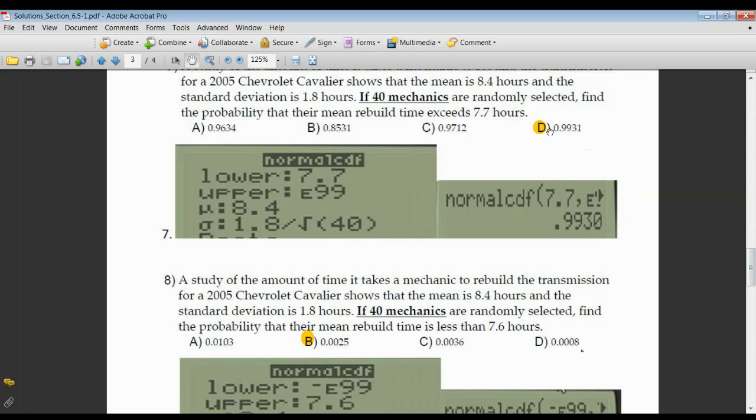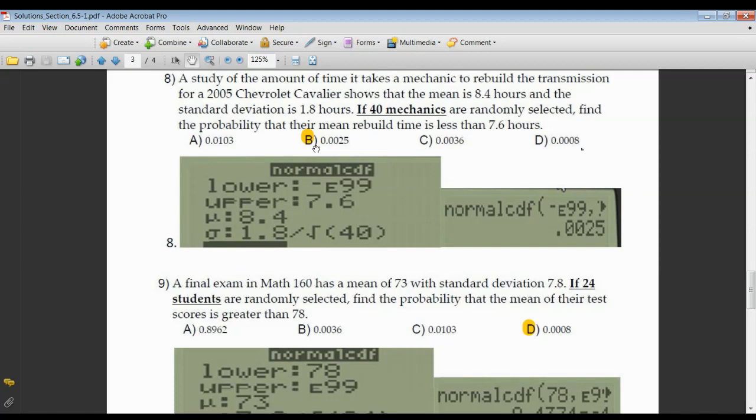Number 8, same Cavalier. We're looking for rebuild time being less than 7.6 hours. So my lower limit is negative E99, my upper is 7.6, my mean is given to me as 8.4. Once again, standard deviation is the original standard deviation of 1.8 divided by the square root of 40, the n value. 0.0025, right on.